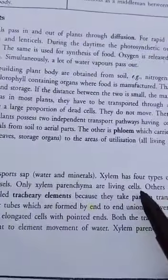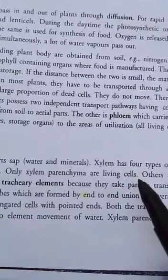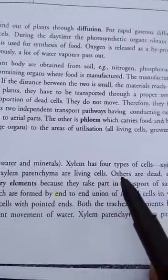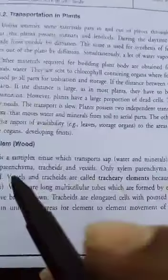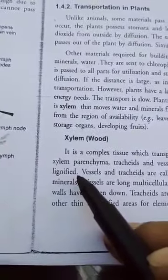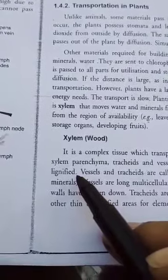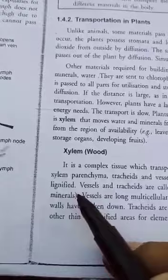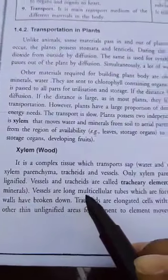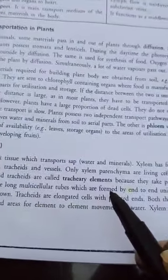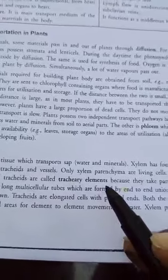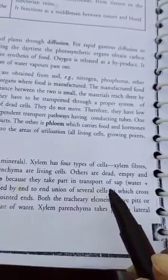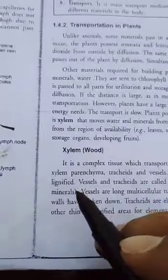Xylem parenchyma consists of living cells, and others are dead, empty, and lignified. Lignified is a type of chemical which makes them hard. Fibers and tracheids are tracheary elements. They take part in transport of water and minerals.